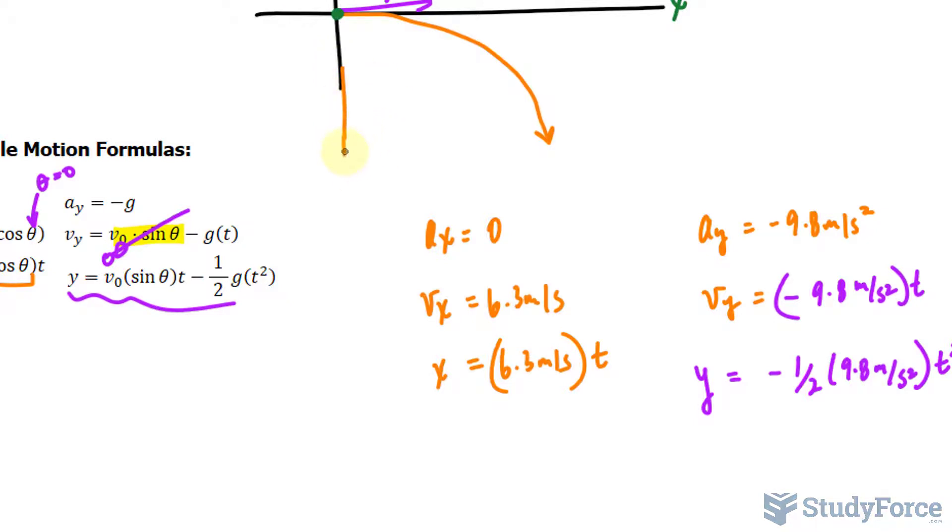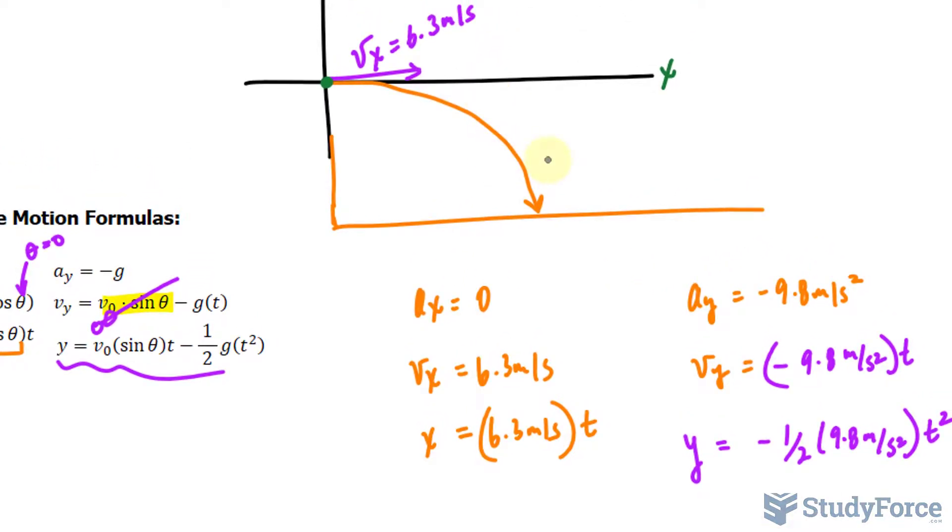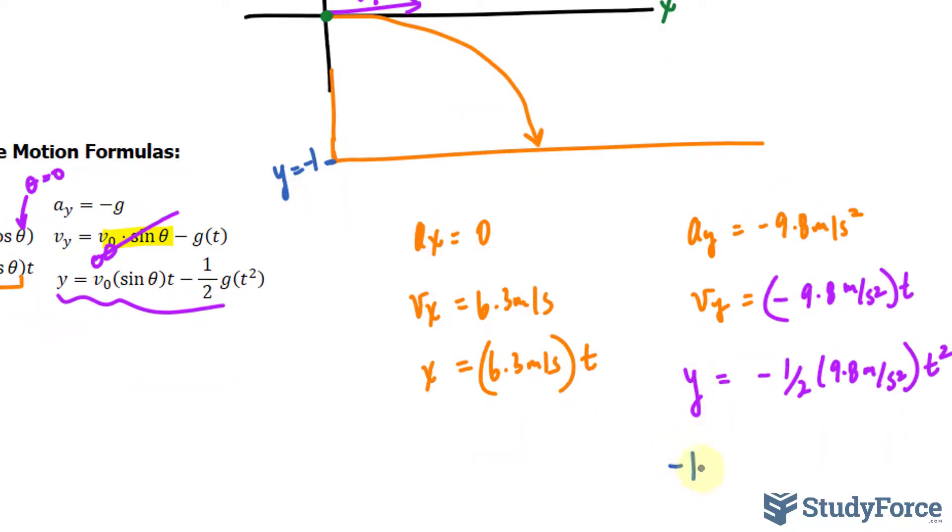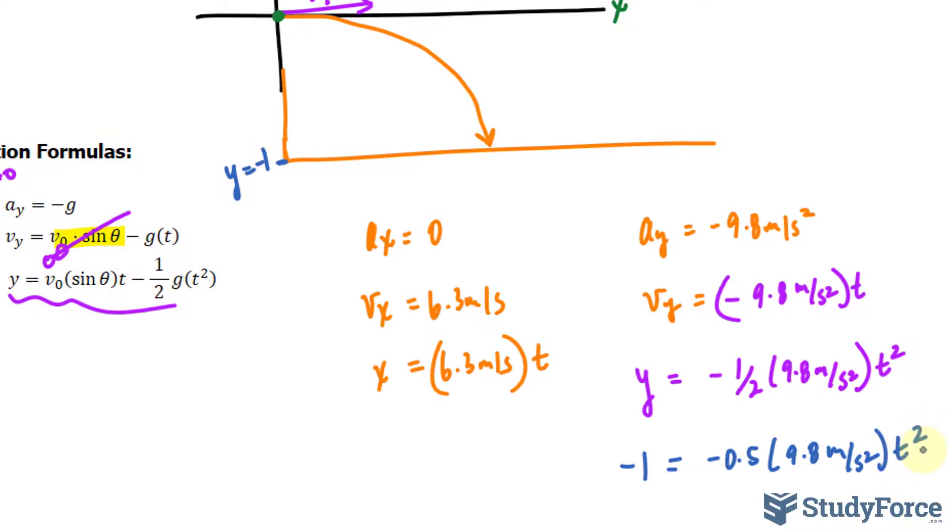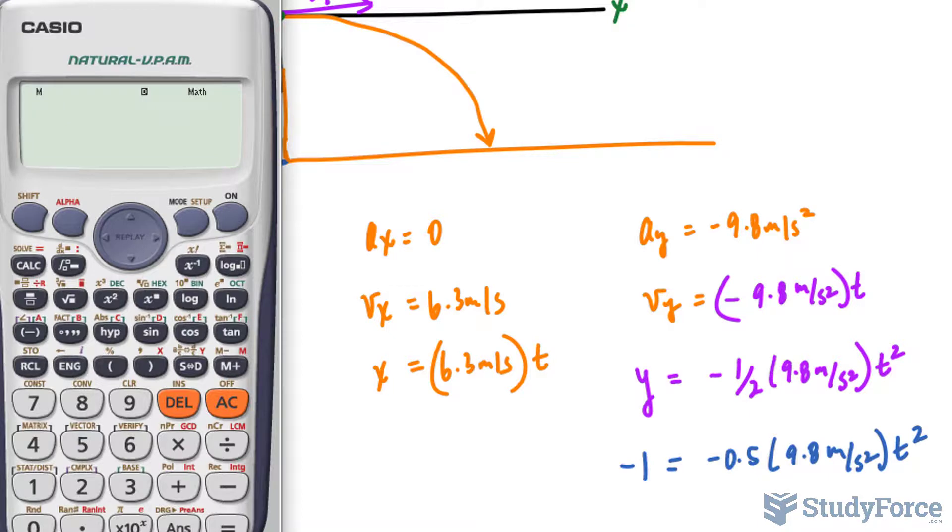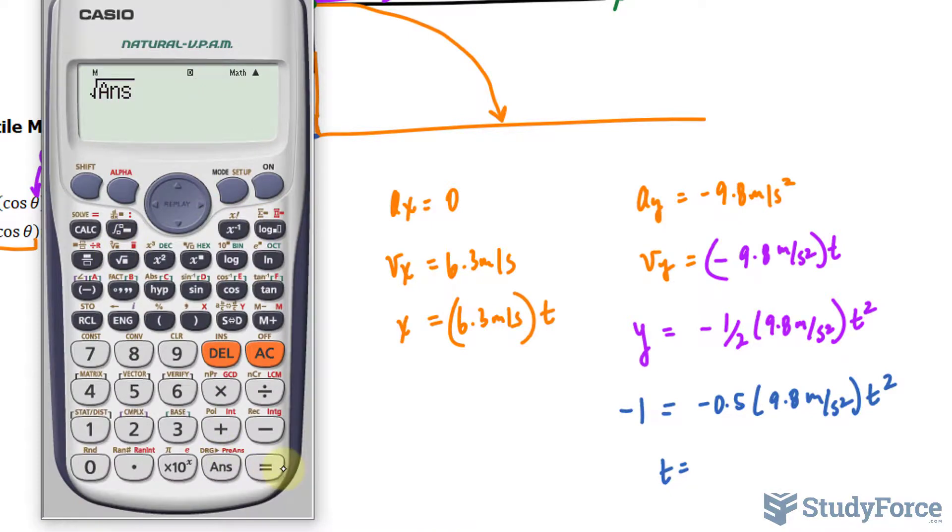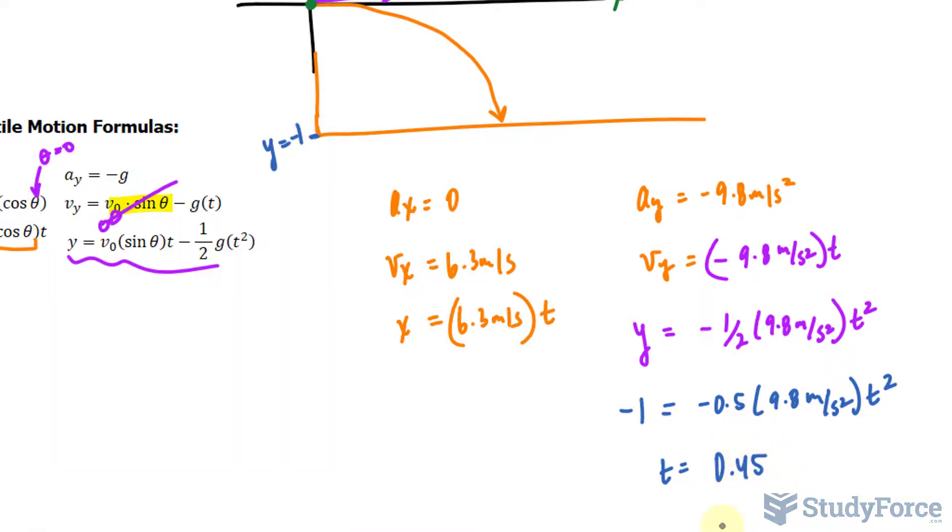What we substitute for y is very important. Remember the hole occurs one meter above the ground. The distance at which this stream travels will occur when y is negative 1. Zero is the starting point. Negative 1 is the end point, since that's the ground, one meter down. I'll substitute that value in for y. We have negative 1 equals negative 0.5 times 9.8 meters per second squared times t². Let's use our calculator. Negative and negative on both sides cancel out. So 1 divided by 0.5 times 9.8, then we'll square root both sides to isolate t. Square root the value gives us roughly 0.45. It takes 0.45 seconds for that water to reach the ground.